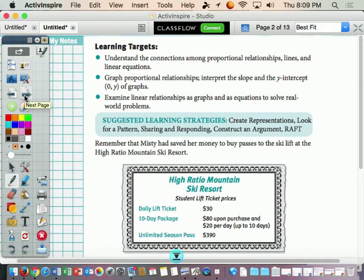Learning targets. Go ahead and circle and underline. That means you need to pause so you can circle and underline. Thank you for resuming. So we're going to understand connections among proportional relationships, lines, and linear equations. Lots of vocab right there.